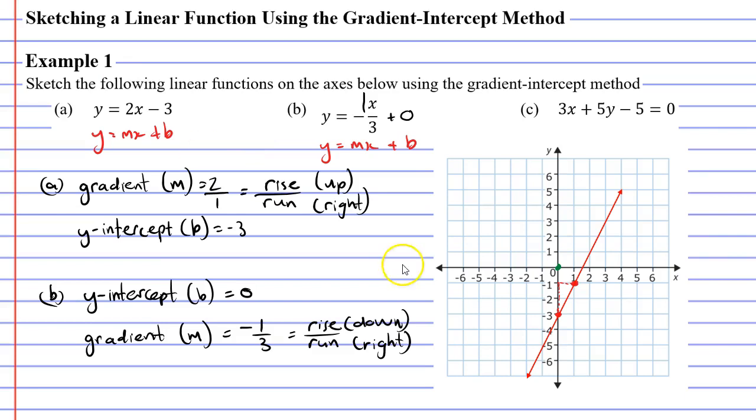So starting at our green point we're going to go down one square and we're going to go to the right three squares. That gives us our second point over here. And then we simply draw a line that passes through these two points.